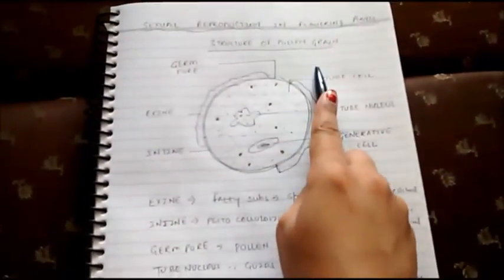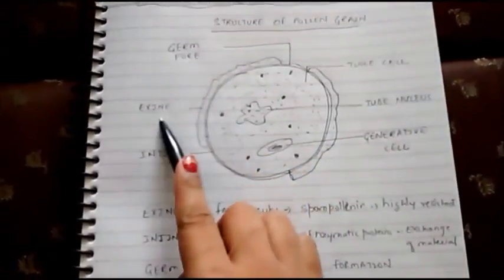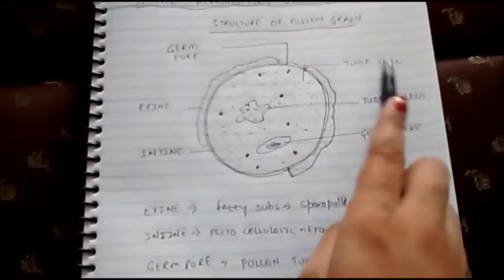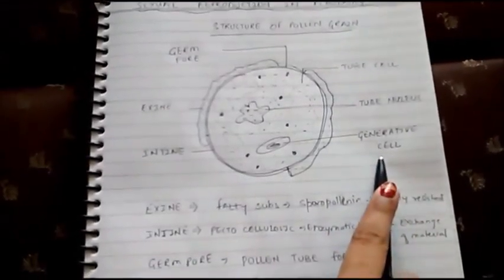So again, the structure of pollen grain consists of germ pore, exine, intine, tube cell, tube nucleus, and generative cell.